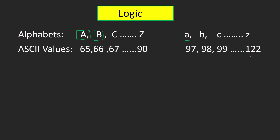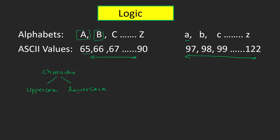Small b has ASCII value 98 and so on. If the ASCII value of your character is between 65 and 90, it is uppercase. If it is between 97 and 122, it is lowercase. Since the character can be either uppercase or lowercase, we have two choices, so we will use decision control statements — if/else — in our approach.